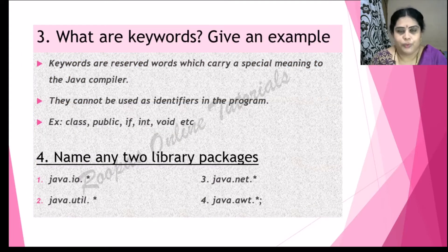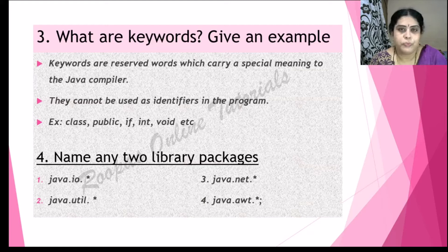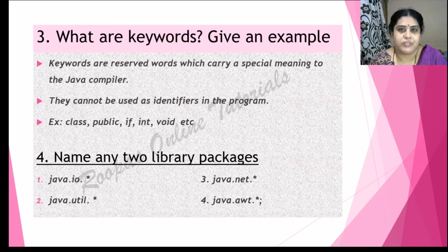What are keywords? Give an example. Keywords are reserved words which have a special meaning to the Java compiler. When the language is created, these keywords come along with the compiler, and through these keywords we write our programs and instructions. They cannot be used as identifiers — meaning you cannot use them as variable names, function names, etc. Some examples are: class, int, float, public.